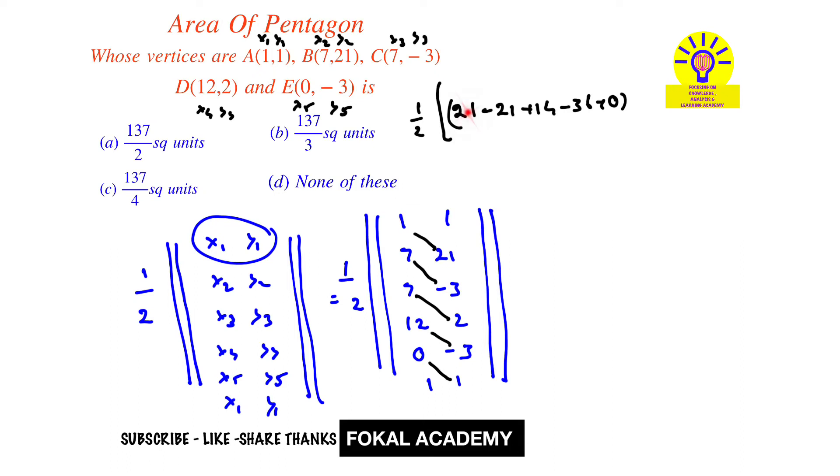So let's observe here: 1×21 product 21, 7×(-3) minus is there minus 21, 7×2 is 14, next 12×(-3) minus 36 and 0, next minus of...